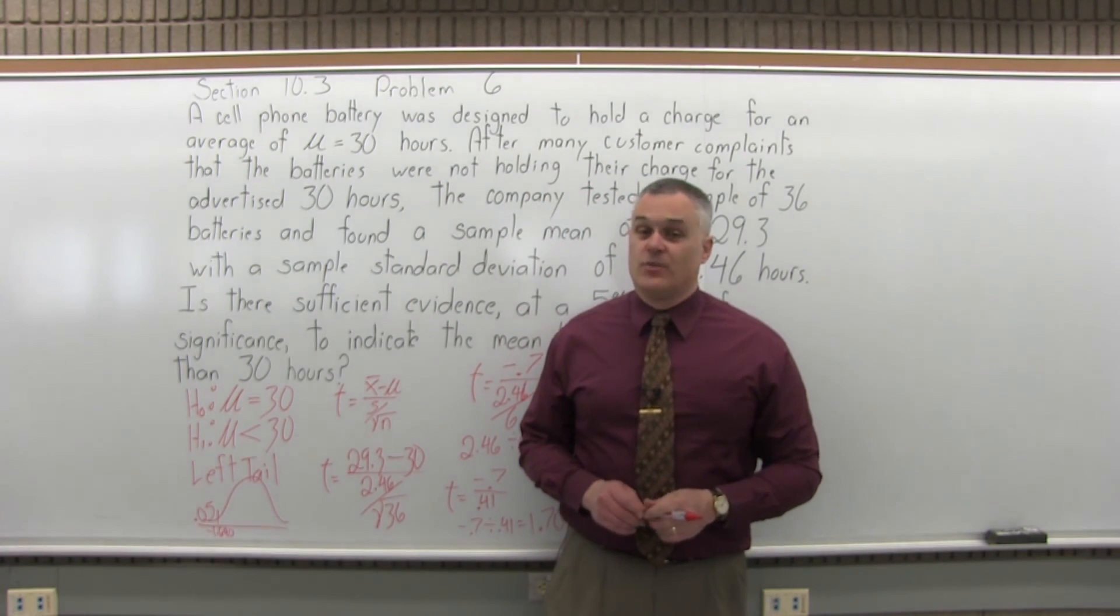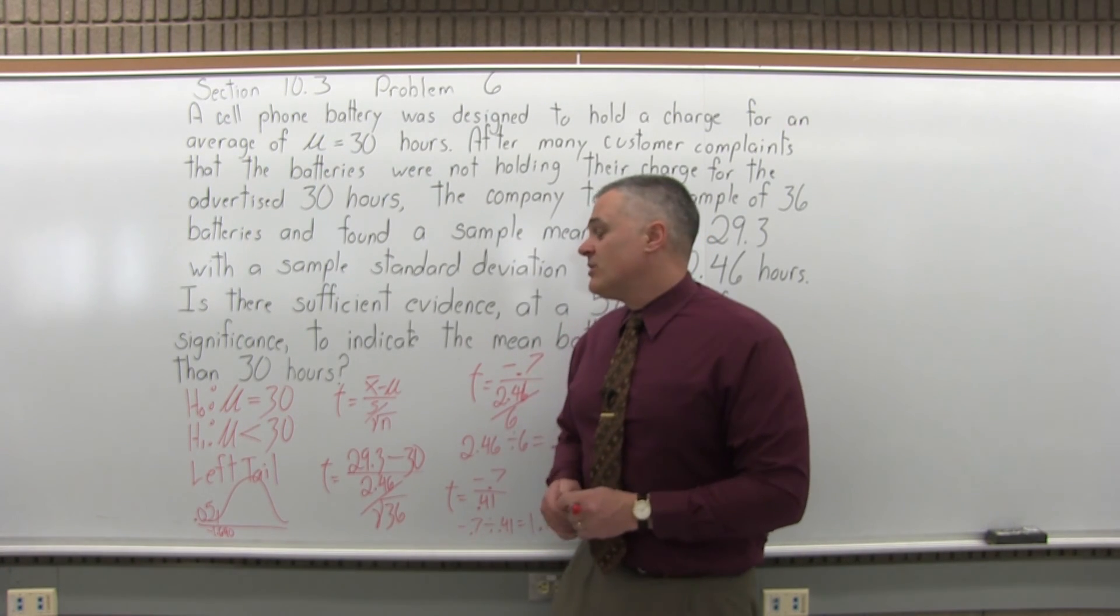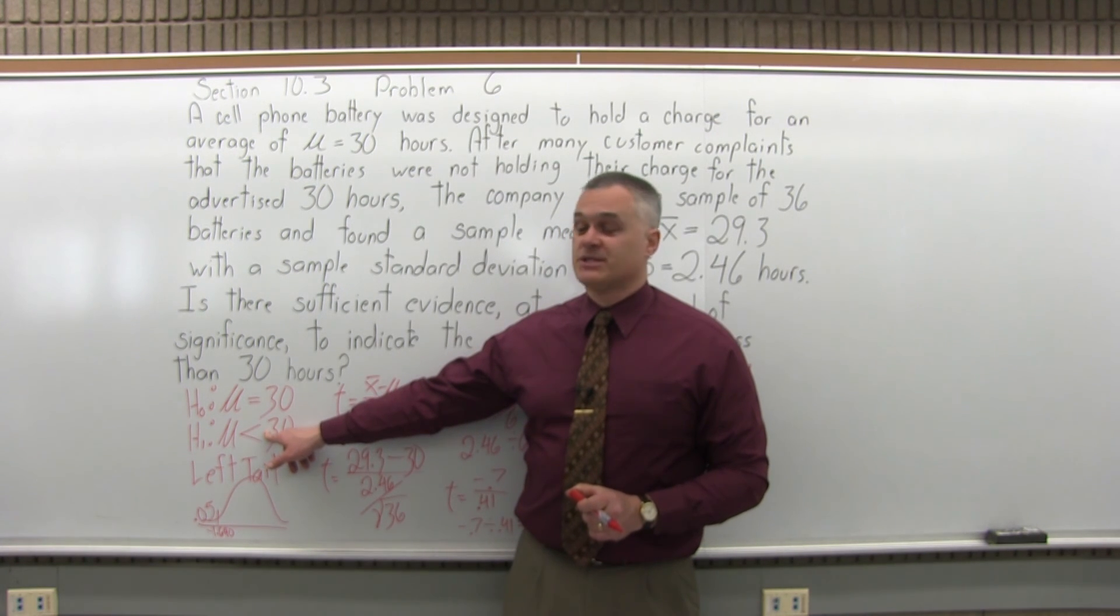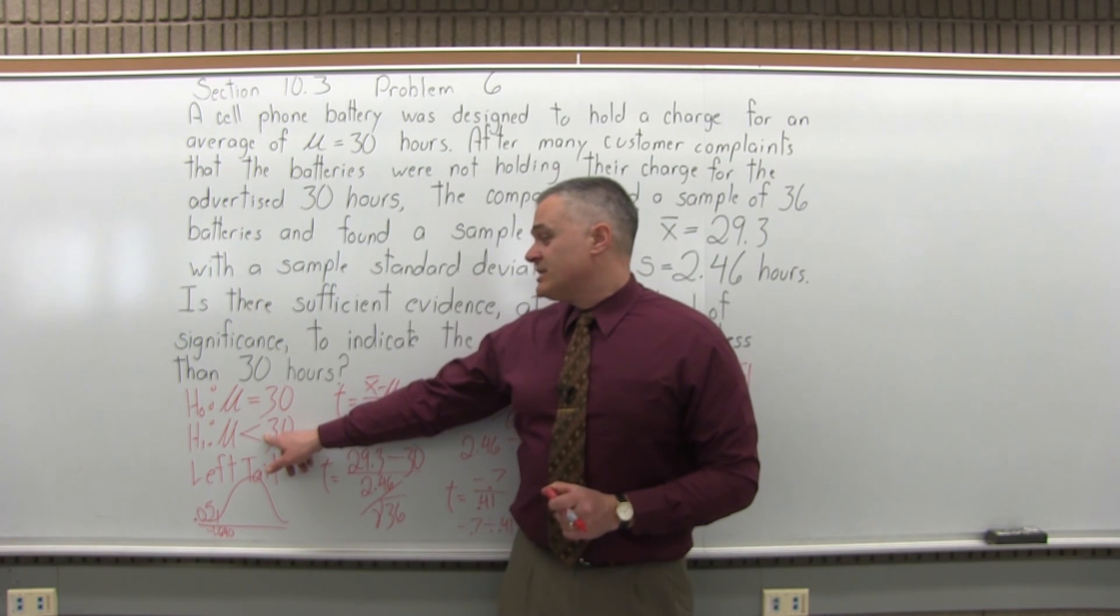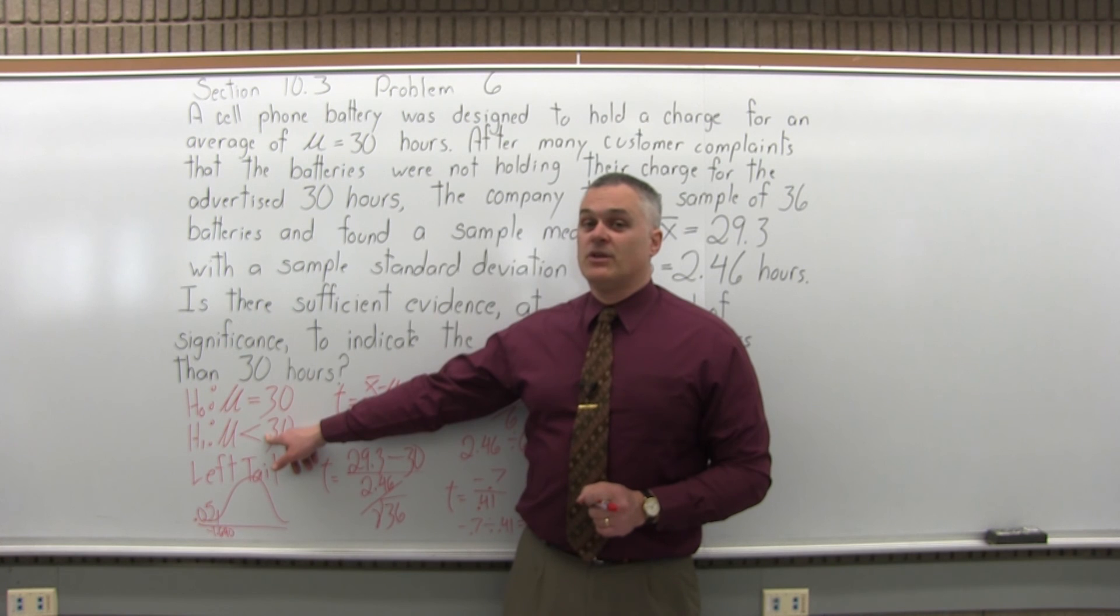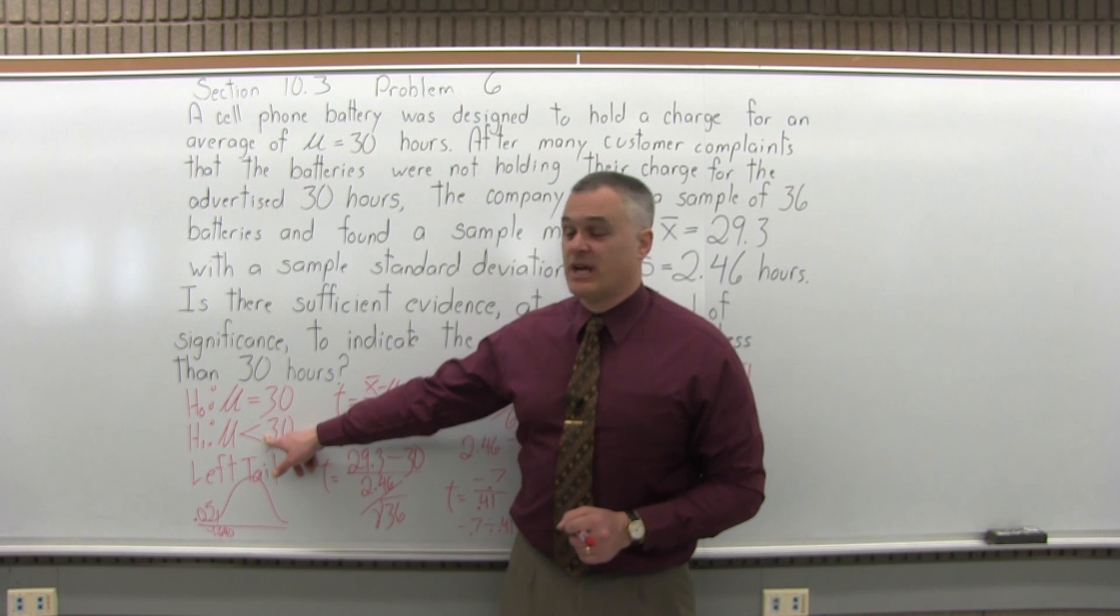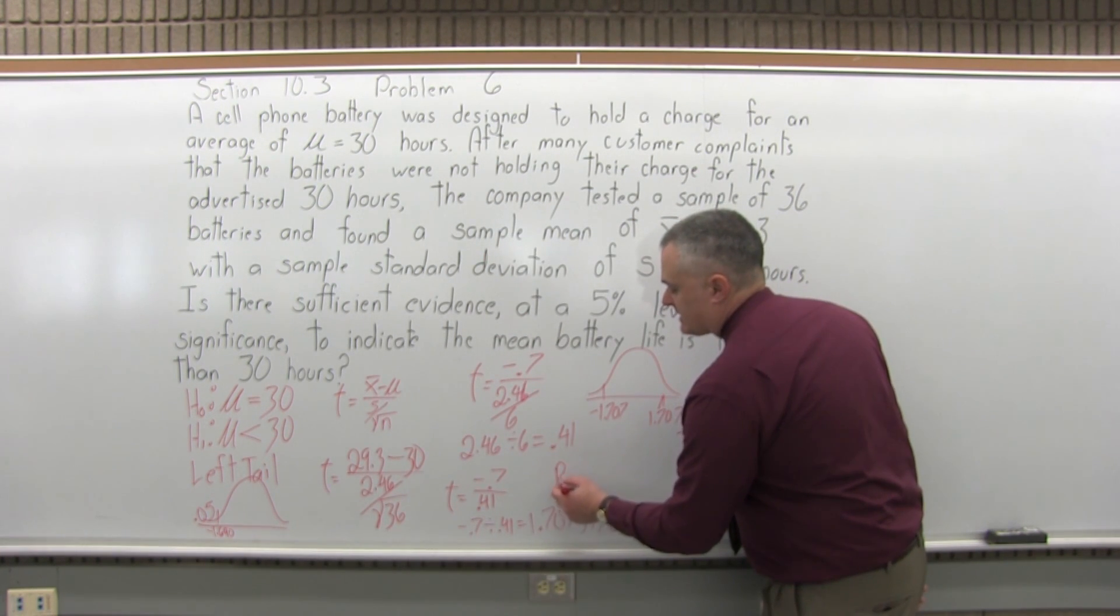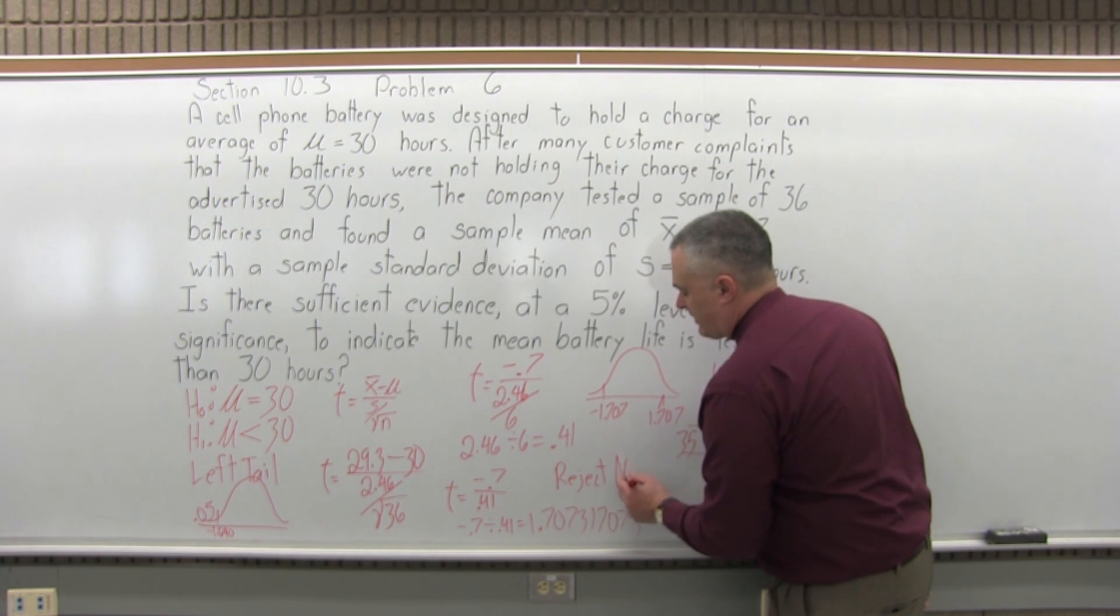So we are barely into the critical region. So the conclusion is reject the null hypothesis. So if you reject the null, you're saying that it's more likely that the alternate hypothesis is true. So it's more likely that the real average is a little less than 30 hours for the battery life. So the conclusion, the final step is state your conclusion. And the conclusion you state is reject the null hypothesis.